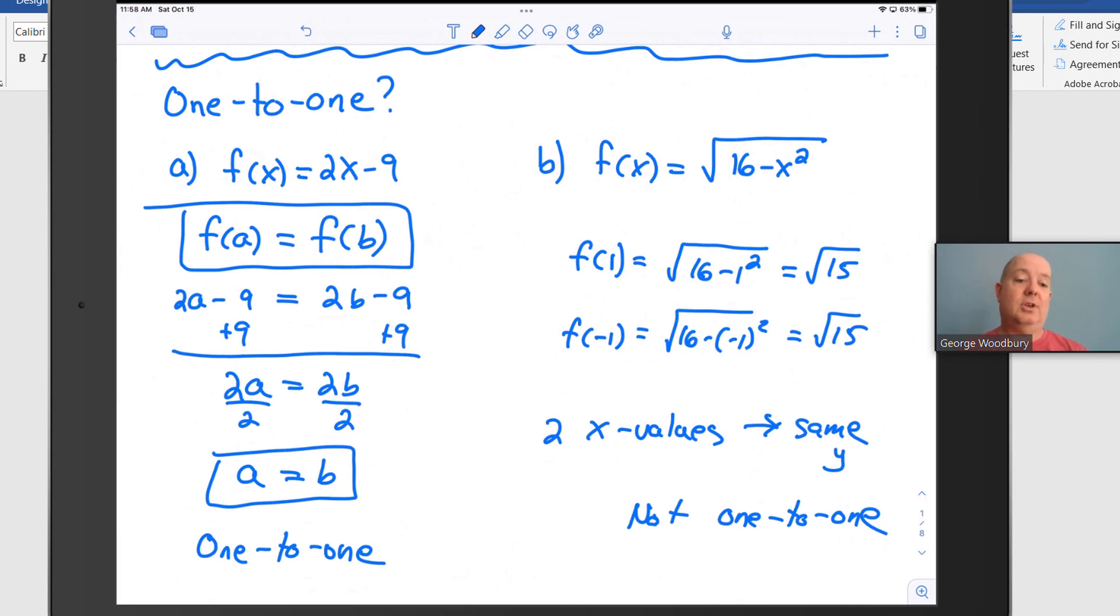In the next video, we'll talk about the horizontal line test, and that's a way to graphically show that a function is or is not one-to-one.